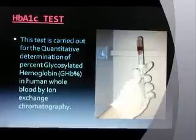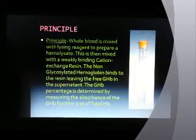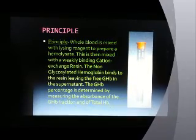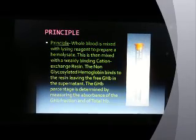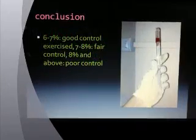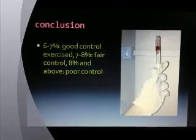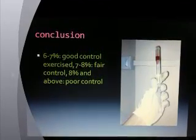The HbA1c test is carried out for the quantitative determination of percentage glycosylated hemoglobin in human whole blood by ion exchange chromatography. Whole blood is mixed with lysis reagent to prepare a hemolysate, which is then mixed with weakly binding cation exchange resin. The non-glycosylated hemoglobin binds to the resin, leaving free GHb in the supernatant. The GHb percentage is determined by measuring the absorbance of the GHb fraction and total hemoglobin. Results: 6–7% indicates good control, 7–8% fair control, and 8% and above indicates poor control.